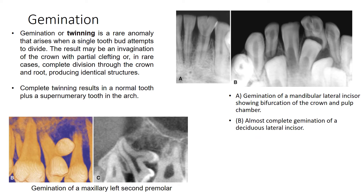Gemination, or twinning, is a rare anomaly that arises when a single tooth attempts to divide. The result may be an invagination of the crown and partial clefting, or in rare cases complete division through the crown and root producing identical structures. Complete twinning results in a normal tooth plus a supernumerary tooth in the arch. The examples shown include gemination of a maxillary left second premolar, gemination of a mandibular lateral incisor showing bifurcation of the crown with a single root, and near-complete gemination of a deciduous lateral incisor.